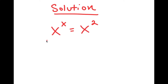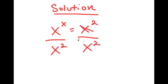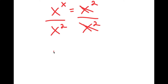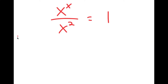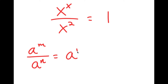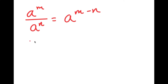The first thing I'm going to do is divide both sides by x to the power of 2. These two cancel out, and I get x to the power of x over x to the power of 2 is equal to 1. Now, if I have something in the form a to the power of m over a to the power of n, this is the same thing as a to the power of m minus n. So x to the power of x over x to the power of 2 equals x to the power of x minus 2, which is equal to 1.